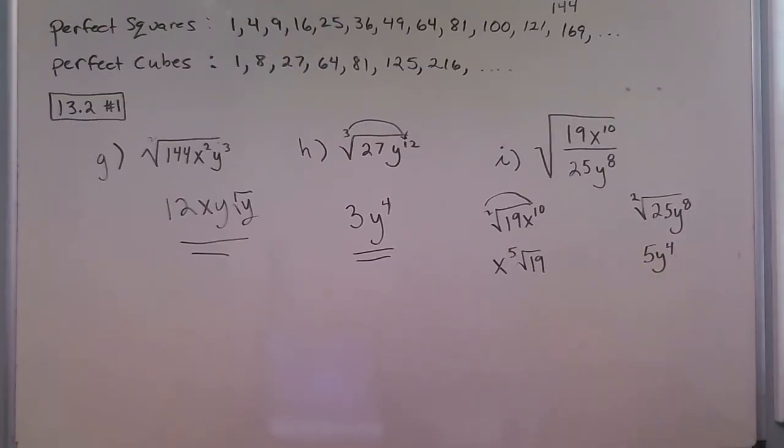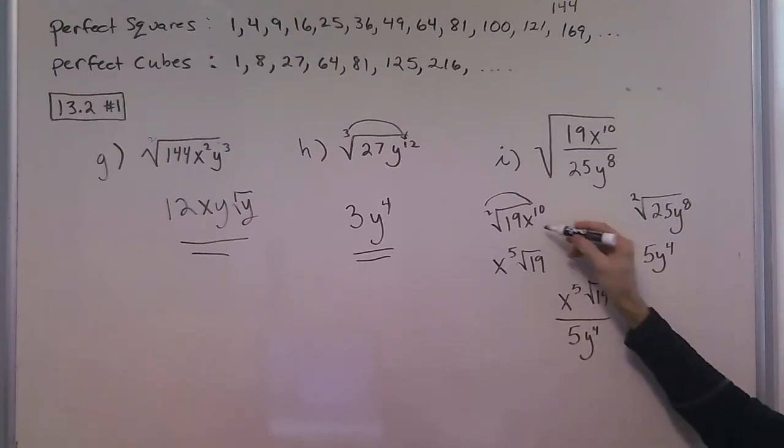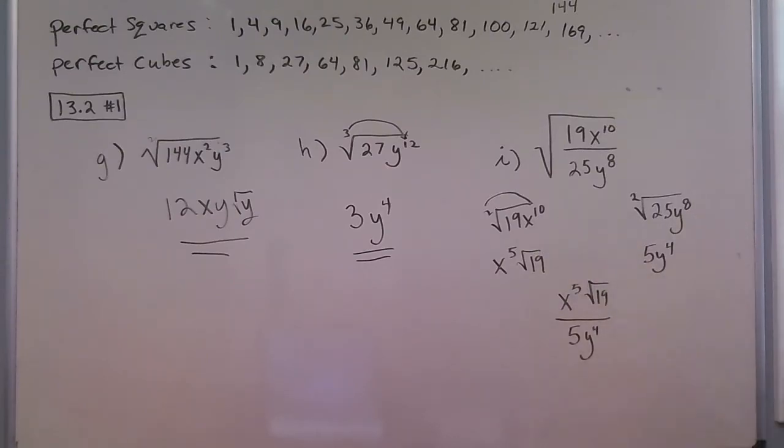Well, what we end up with then is x to the fifth times square root of 19 over 5y to the fourth. So attack the numerator, attack the denominator, and then stack them for your answer.